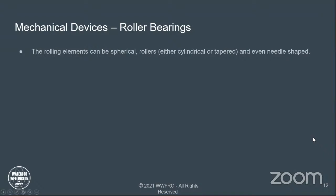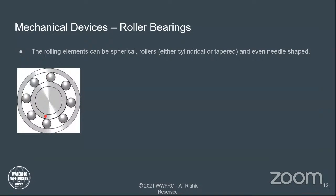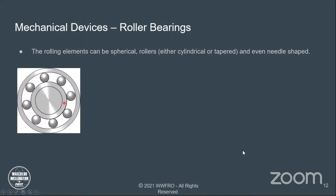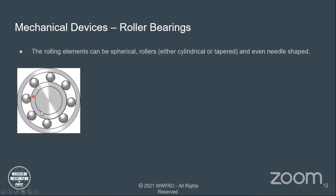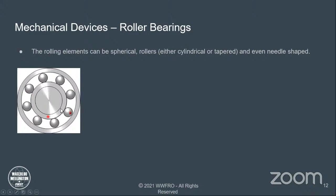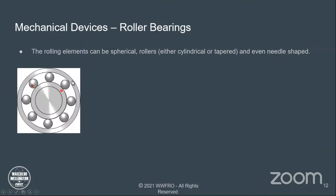The rolling elements can be spherical, cylindrical rollers, tapered rollers, or even needle-shaped. In this GIF showing a spherical roller bearing, we have a rotating shaft with an inner race pressed on, rotating with the shaft, while the balls rotate as they move against the stationary outer race.